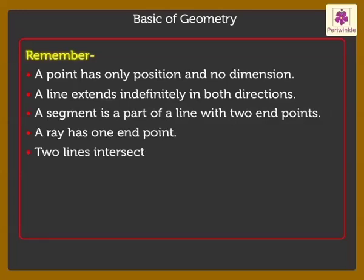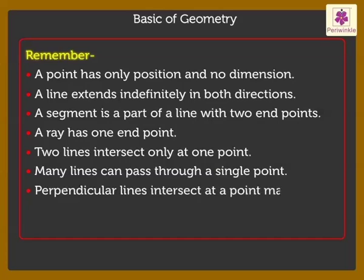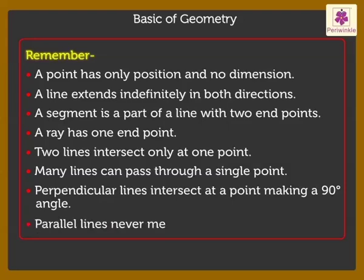Two lines intersect only at one point. Many lines can pass through a single point. Perpendicular lines intersect at a point making a 90 degrees angle. Parallel lines never meet.